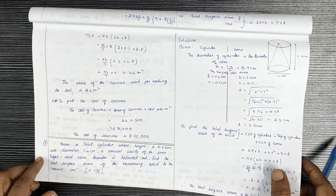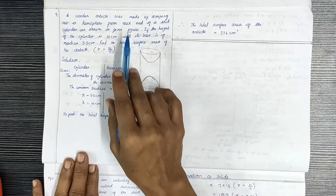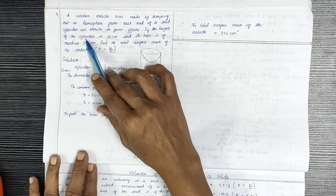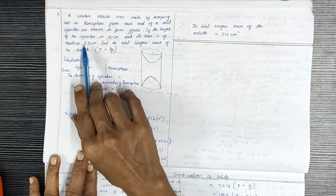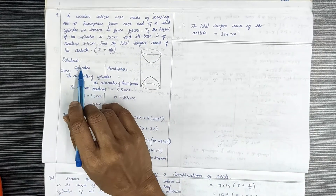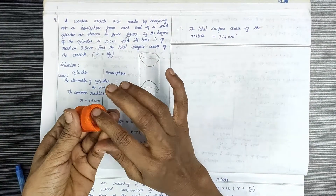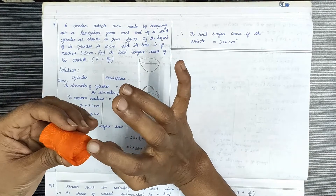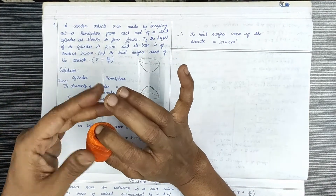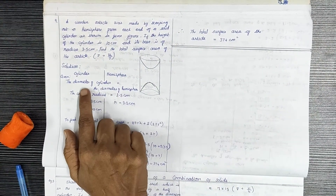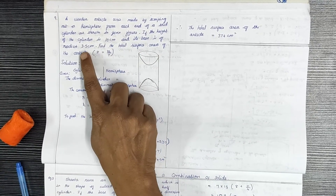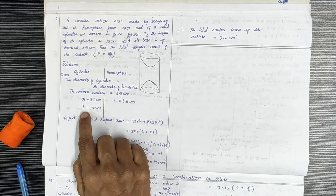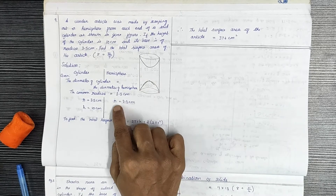Question 9: A wooden article was made by scooping out a hemisphere from each end of a solid cylinder. The height of the cylinder is 10cm and the base radius is 3.5cm. The hemisphere radius is also r = 3.5cm.